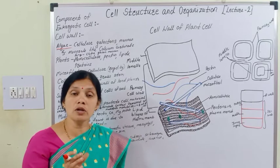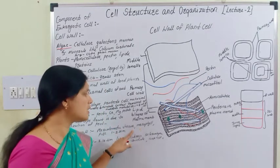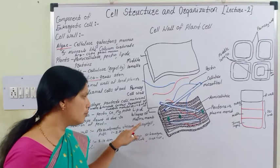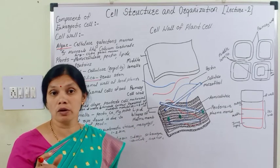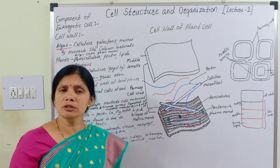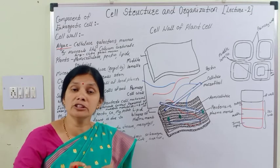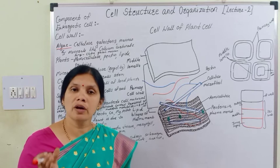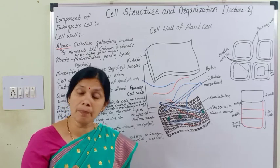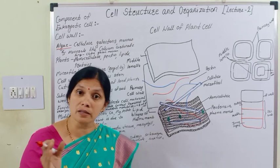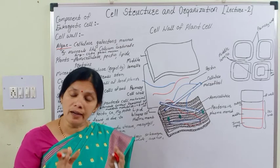The primary cell wall is also observed in mesophyll cells. In the early stages of growth and development, when a number of plant cells are formed, initially the primary cell wall is formed first.